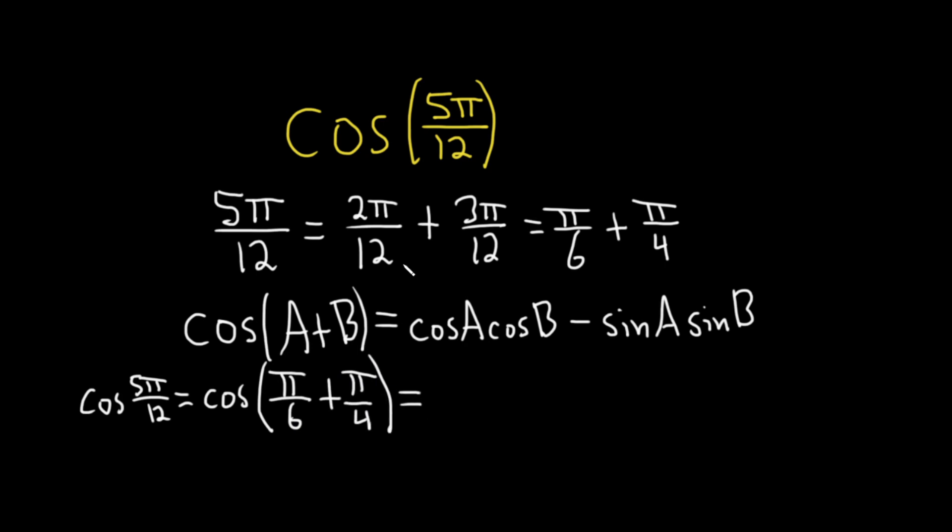So this is equal to, it's cosine cosine, so cosine of π over 6, cosine of π over 4, minus, and then it's sine sine, so sine of π over 6, sine of π over 4.